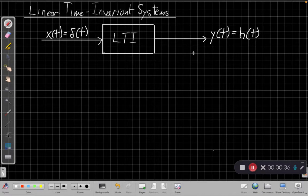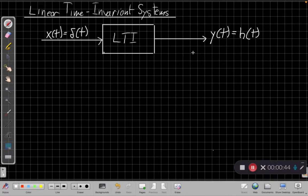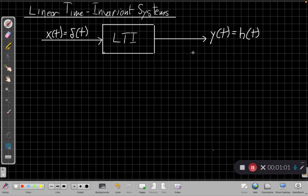For an LTI system, this is enough information from this one particular special input to tell me how the system will respond to any input. That's a remarkable property, and we do this through the convolution integral. In this video, I'm going to show you where that integral comes from and why that works.